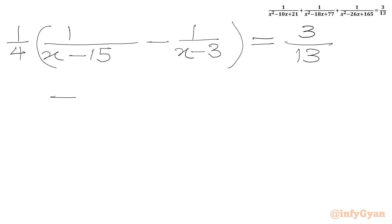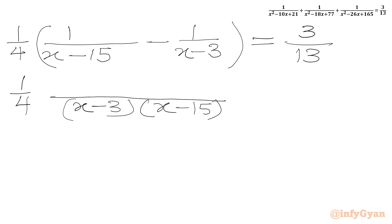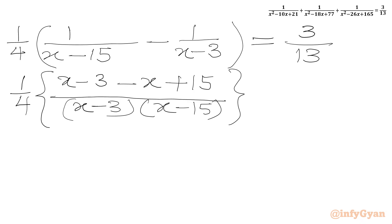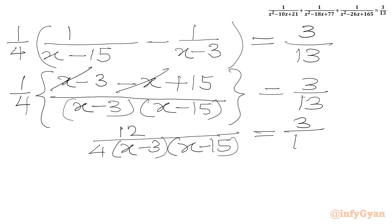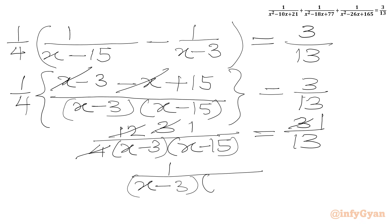Taking LCM on the right-hand side with denominator (x minus 3)(x minus 15), the numerator becomes (x minus 3) minus (x minus 15), which simplifies to 12. So we get 12 over 4(x minus 3)(x minus 15) equals 3 over 13. Since 12 over 4 equals 3, dividing both sides by 3 gives 1 over (x minus 3)(x minus 15) equals 1 over 13.